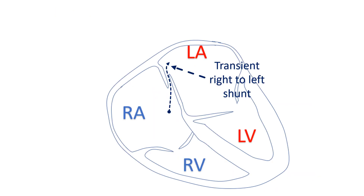But occasionally, as in straining, the pressure in the right atrium transiently rises above that in the left atrium, so that blood can pass transiently from the right atrium to the left atrium across the PFO.